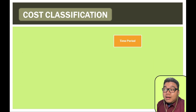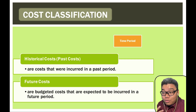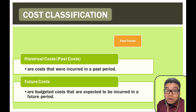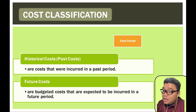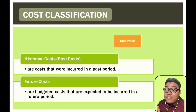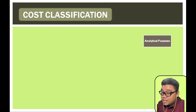Cost classification according to time period: historical costs are already incurred. In decision making, historical costs are costs of the past and should not be considered because once a cost is incurred, it is no longer relevant to future decisions. Future costs are yet to be incurred and should be considered in decisions, as long as they are future costs and differ between alternatives.